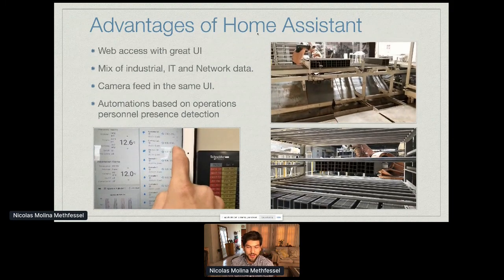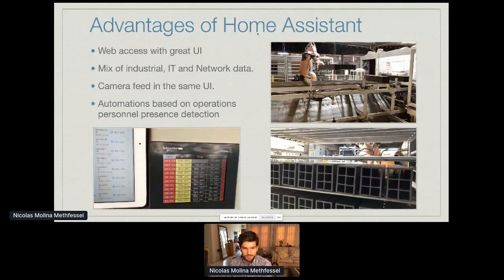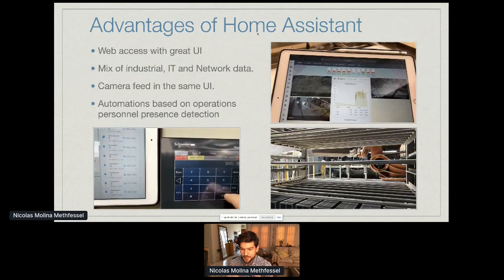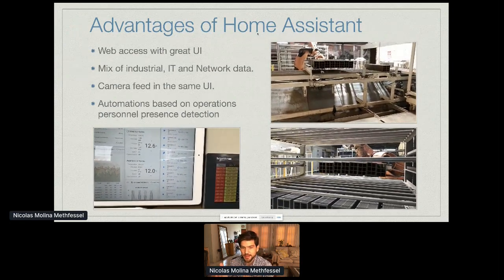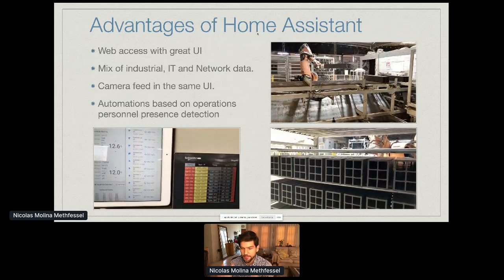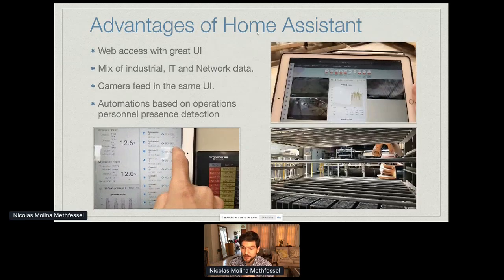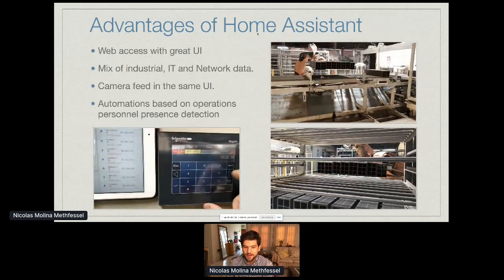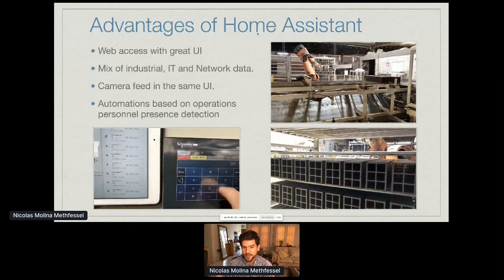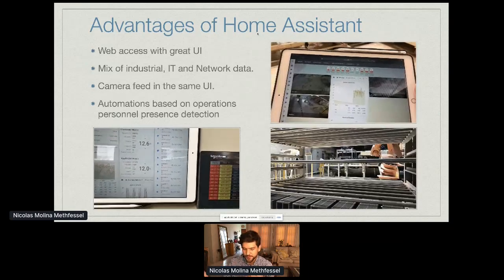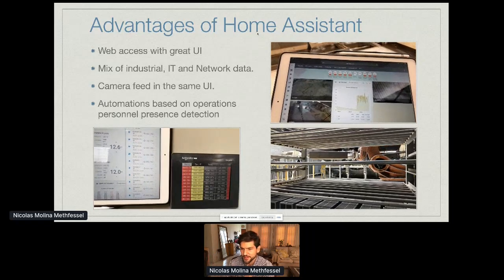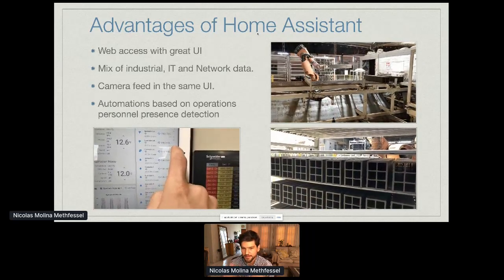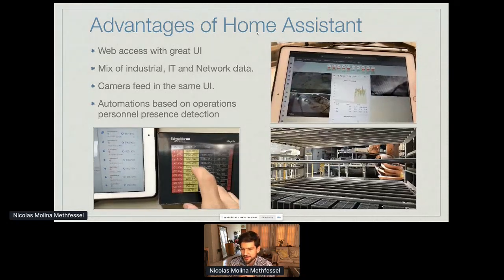The advantages of using Home Assistant in a factory instead of the old software: first, web access. Home Assistant has a very nice web UI that is configurable, and I can mix all the industrial data — graphs and sensor information — with IT data, network usage, and camera feeds within the same UI. I also started making automations based on presence detection, which is usually used in homes to turn off lights. In the factory I use it to preheat machines when operators arrive, since they first go to change clothes, giving me about 10 minutes to start preparing the machines.